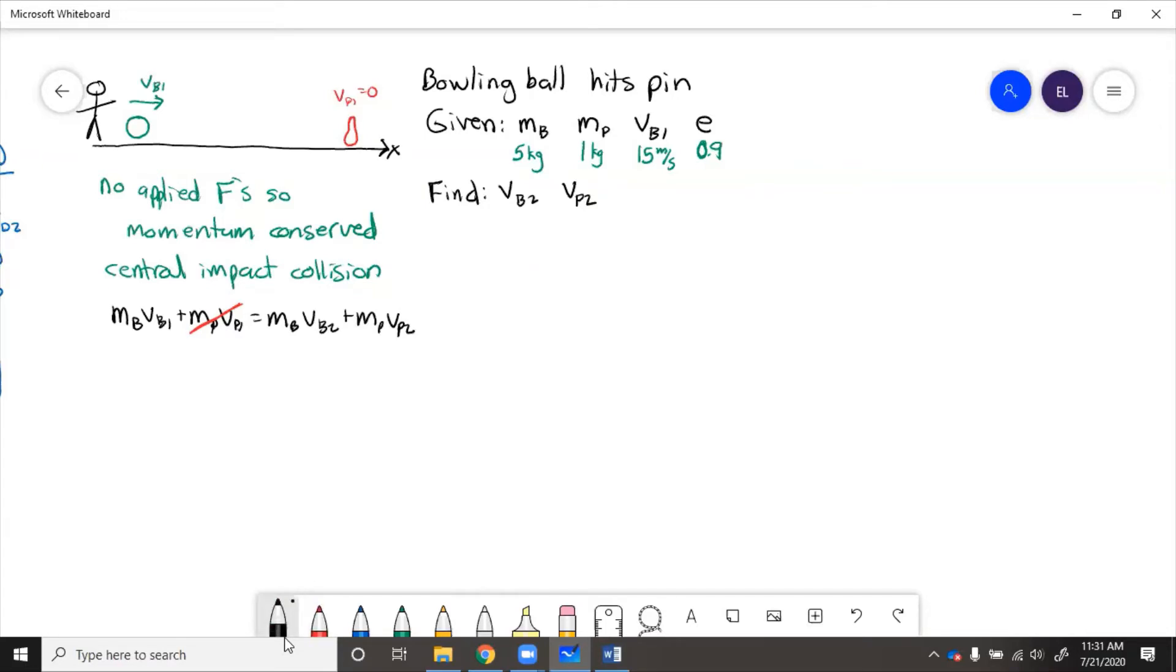So we need the E equation. E equals negative VP2 minus VB2 over VP1 minus VB1.